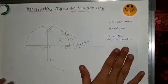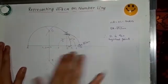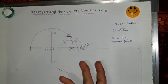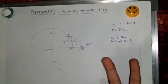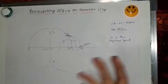So here we finished our representation of root 9.3 on the number line and Z is our point. I hope you liked our video. For more new upcoming videos please like, share and subscribe to our channel.